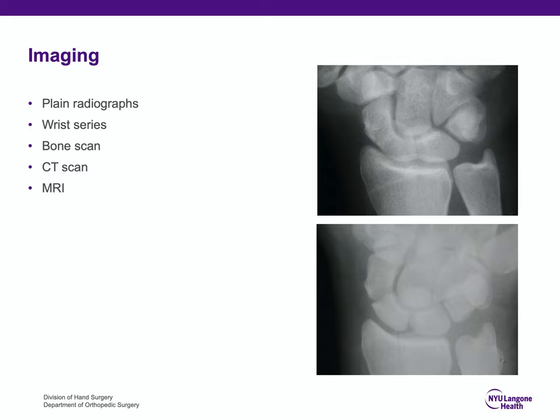Sometimes special views like a hamate view or a carpal tunnel view are needed, as well as a CT scan or MRI to evaluate individual carpal bone fractures.